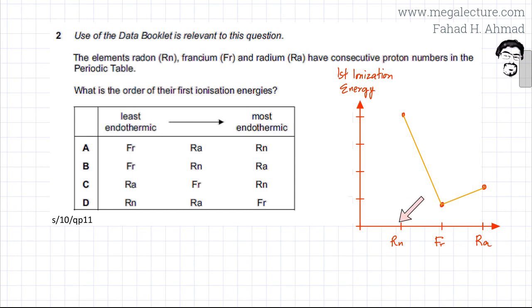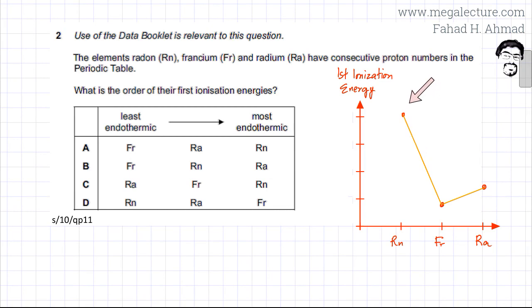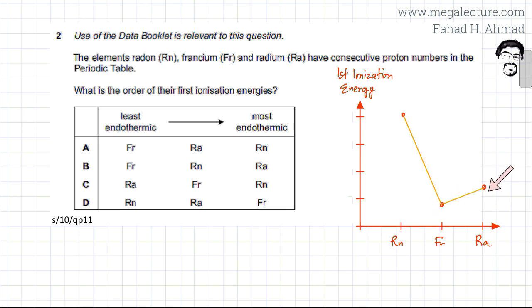The graph of the first ionization energies of radon, francium, and radium would look something like this. Radon is higher up in the periodic table so its ionization energy is greater — it has fewer shells and is closer to the nucleus, so removing an electron is difficult. Francium and radium are lower down, with more shells and more shielding, so removing electrons is easier. Radium is slightly more difficult than francium because radium has more protons.